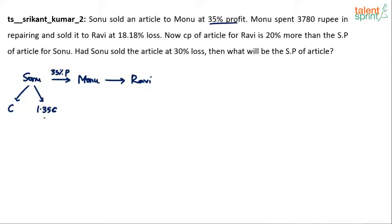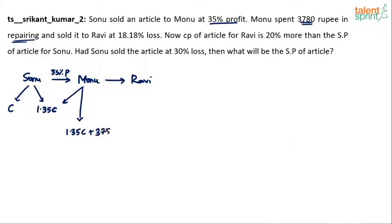This selling price for Sonu will become the cost price for Monu. Monu bought it from Sonu at 1.35C. But then he spent Rs. 3780 in repairing, so Monu's total cost will be 1.35C plus 3780.